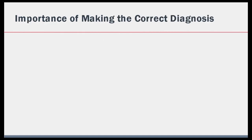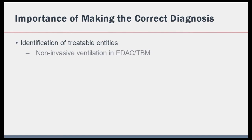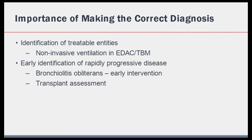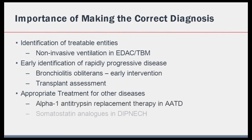To summarize the importance of making the correct diagnosis and not simply dismissing all airflow obstruction as COPD or asthma: it is important to identify treatable entities such as excessive dynamic airway collapse. It is also vital to identify rapidly progressive conditions such as bronchiolitis obliterans, where early intervention may be life-saving. Making the correct diagnosis may allow appropriate treatment, such as augmentation therapy in alpha-1 antitrypsin deficiency and somatostatin analogues in DIPNECH.